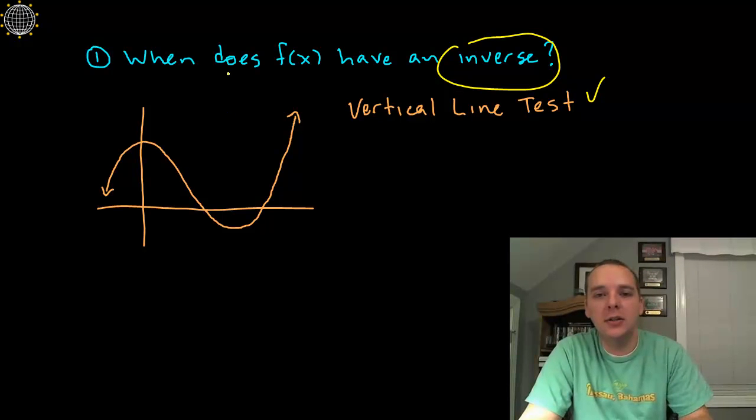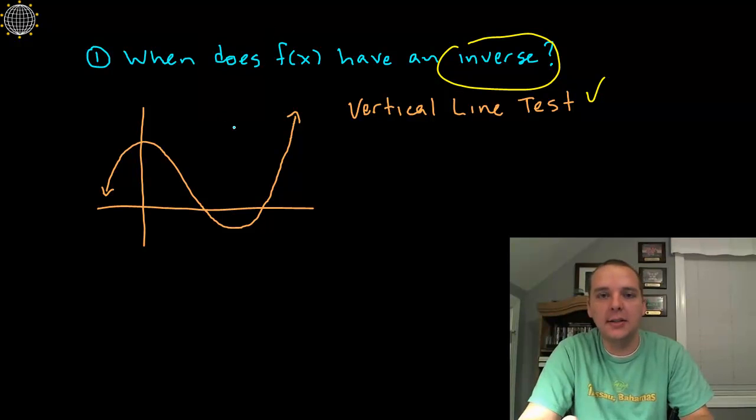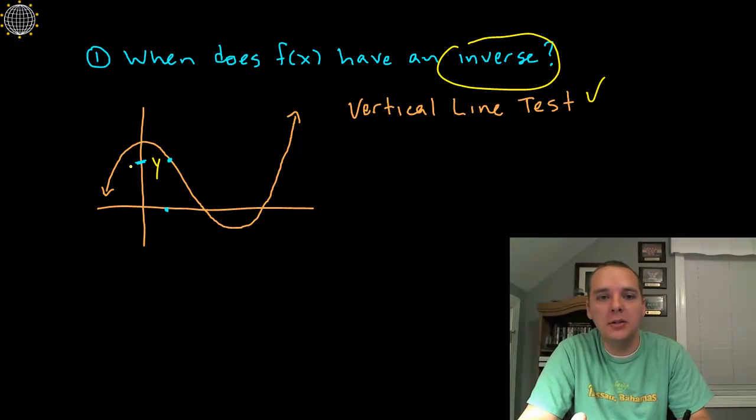So here's the underlying thing that's going on with the vertical line test, and we'll tie this in with inverse functions. For every x you want to only have one y value, but for inverse functions we also want to keep an eye out on the y values, and make sure that they only correspond to one x value. So it's a little more difficult here.